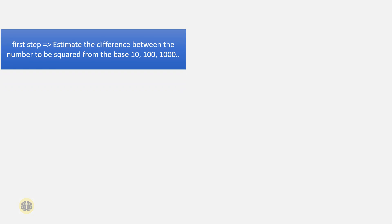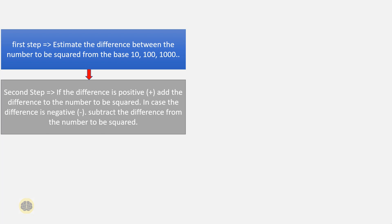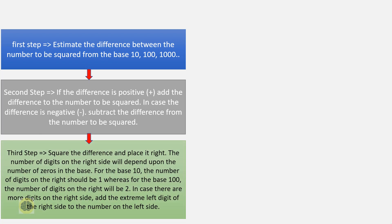In the first step, estimate the difference between the number to be squared and the base — 10, 100, or 1000. In the second step, if the difference is positive add the difference to the number to be squared; if the difference is negative subtract the difference from the number to be squared. In the third step, square the difference and place it on the right. The number of digits on the right side depends on the number of zeros in the base. For base 10, there should be 1 digit on the right; for base 100, there should be 2 digits on the right. If there are more digits on the right side, add the extreme left digit of the right side to the number on the left side.